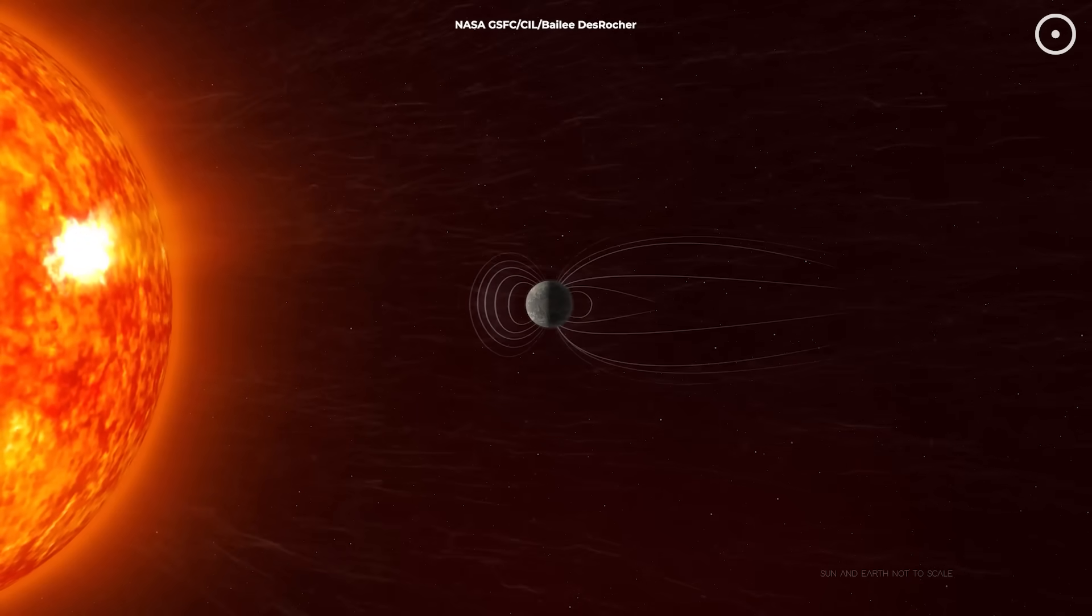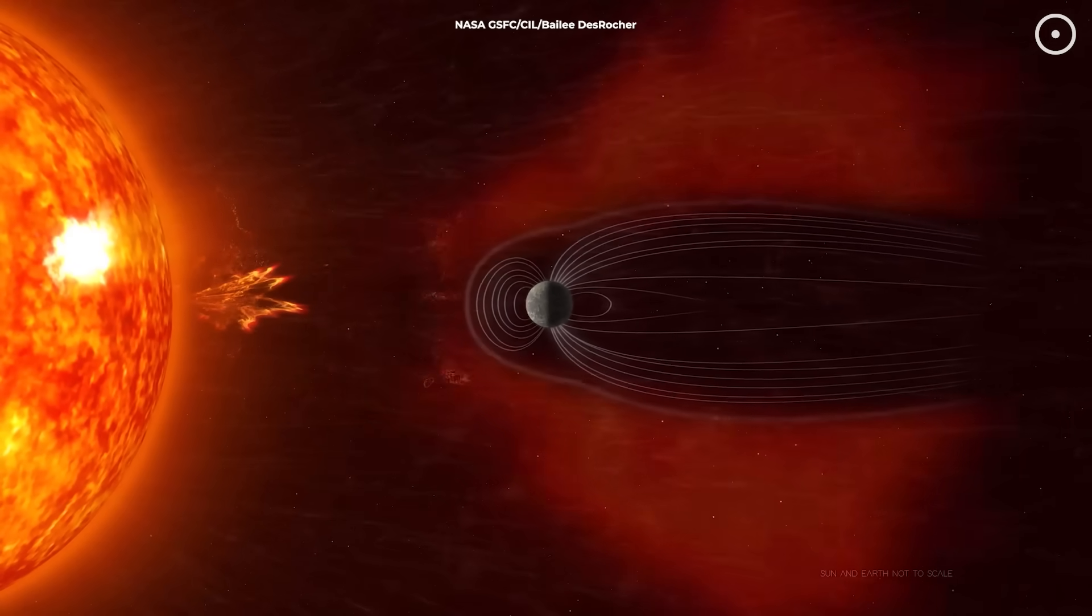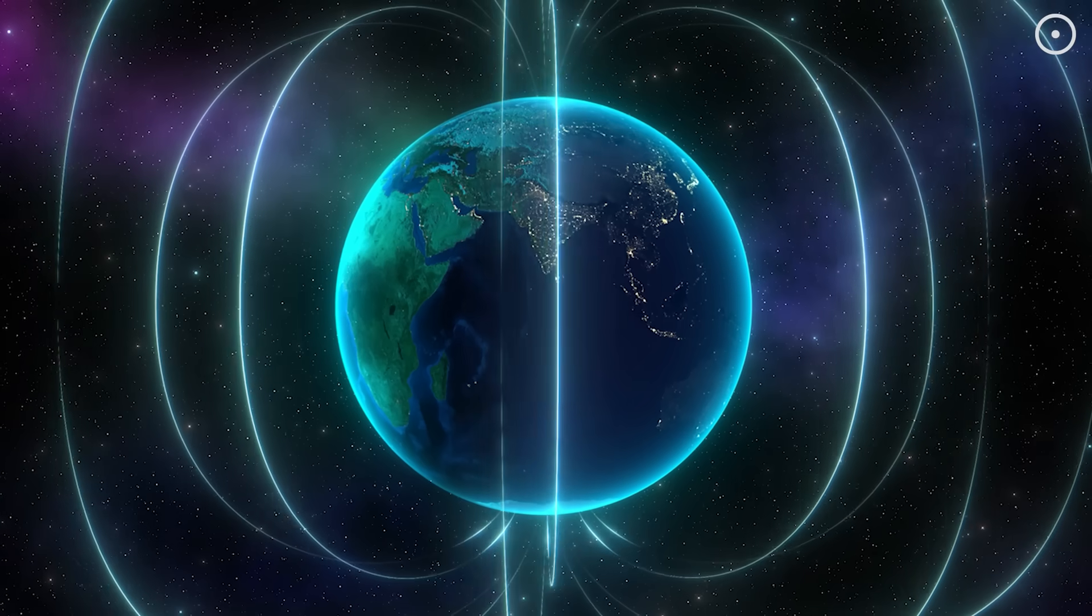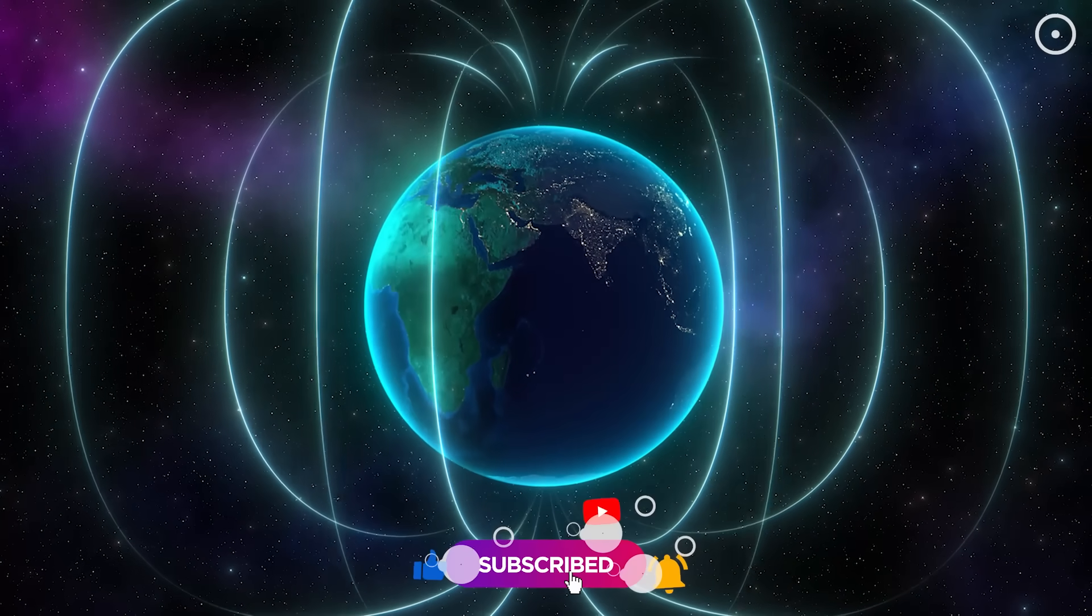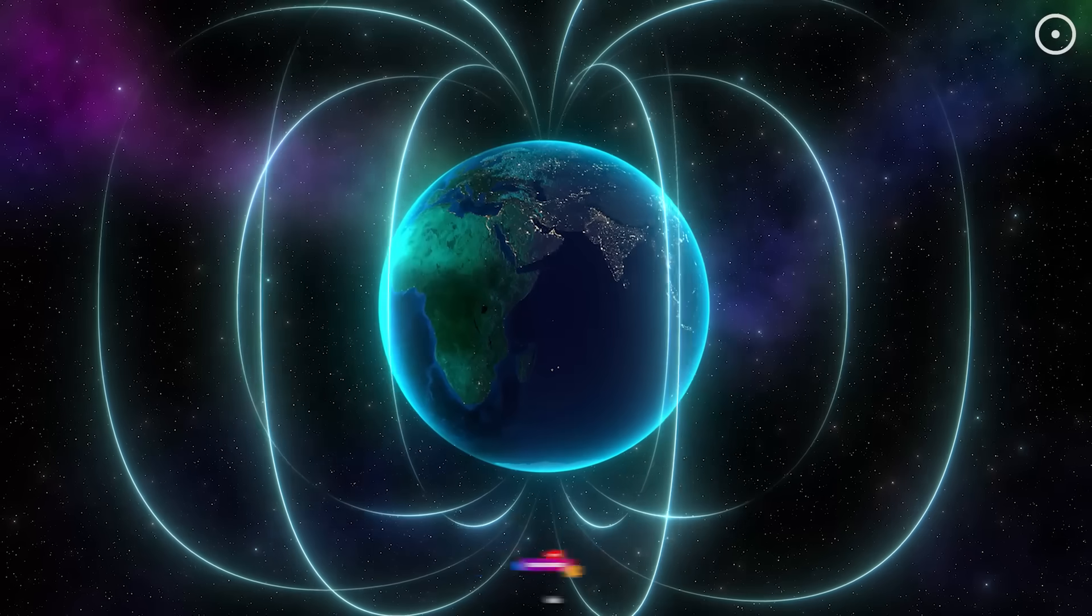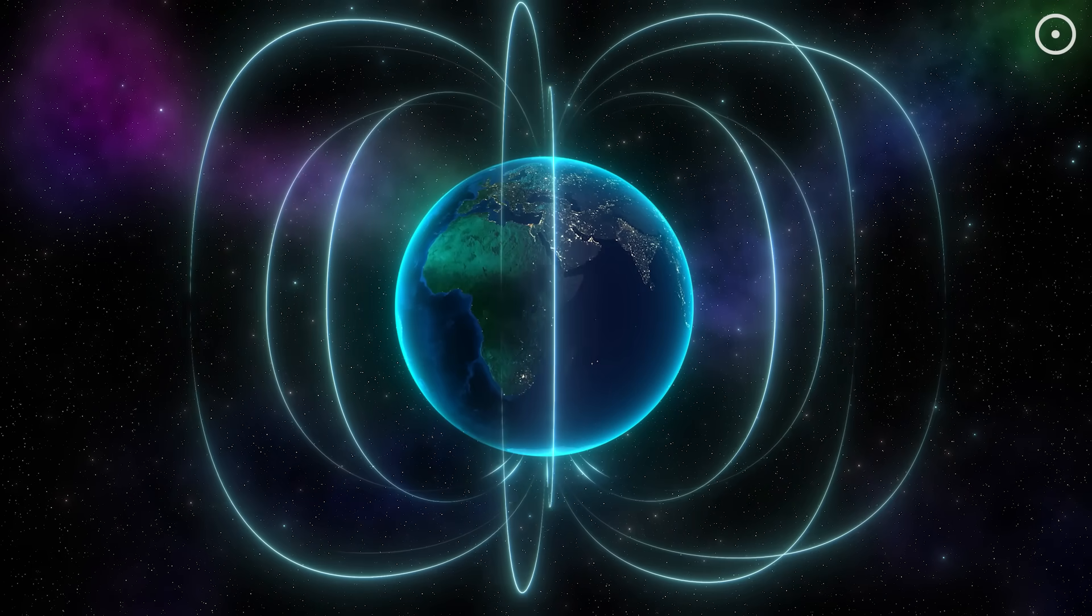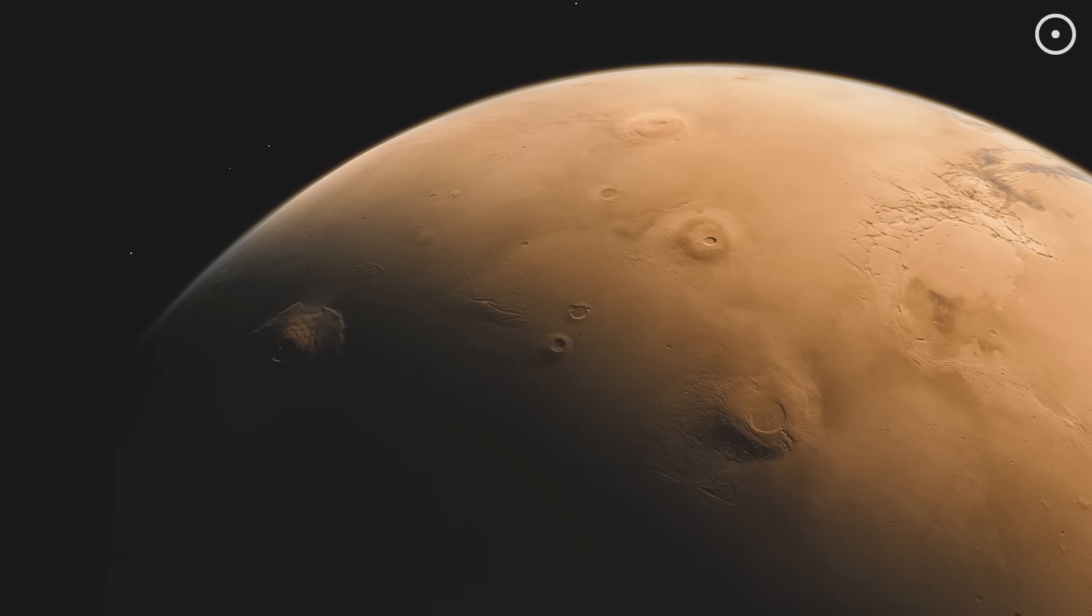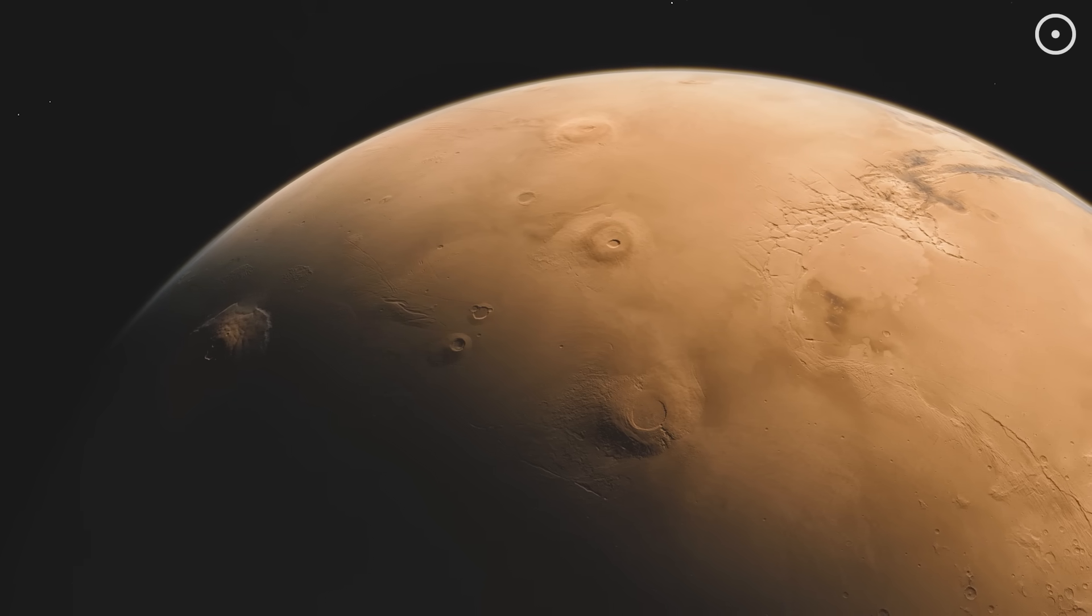Stay with me because I'm about to show you how this invisible force protects us every single day and what might happen when it starts to fail. Earth's magnetic field is our planet's first line of defense, an invisible shield stretching far into space. Without it, Earth would look a lot more like Mars, a barren world stripped of its atmosphere by the solar wind. But what exactly is this shield and how does it work?